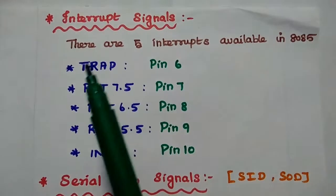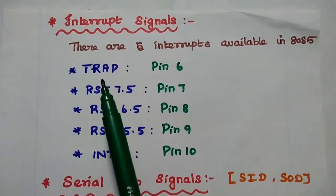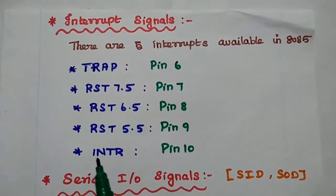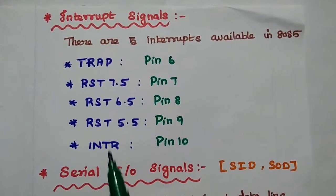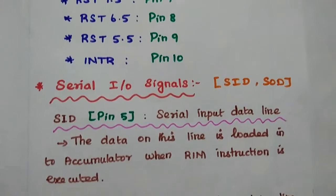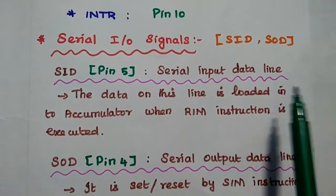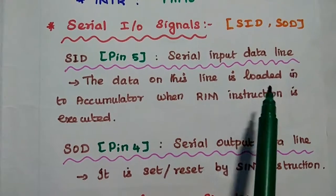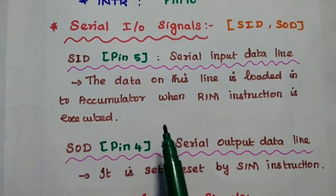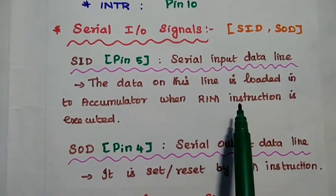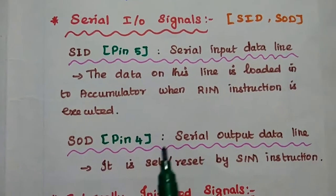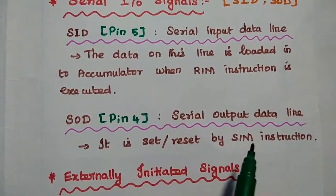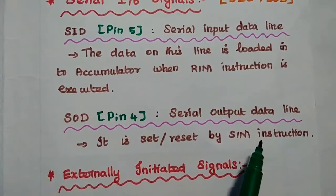The interrupt signals: there are five interrupts in 8085 — Trap, RST 7.5, RST 6.5, RST 5.5, and INTR. INTR means interrupt request and RST means restart. For serial input/output signals, two signals are used: SID and SOD. SID is the serial input data line — data on this line is loaded into the accumulator when the RIM (read interrupt mask) instruction is executed. SOD is the serial output data line, set or reset using the SIM (set interrupt mask) instruction.